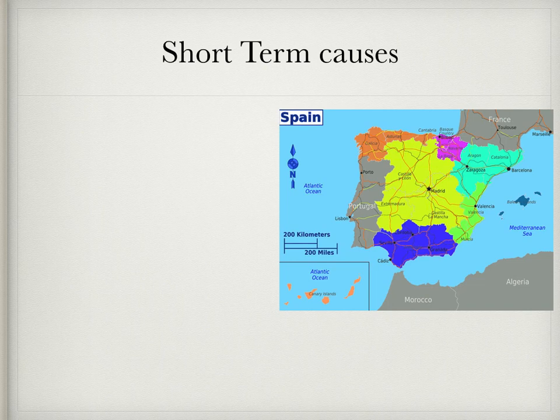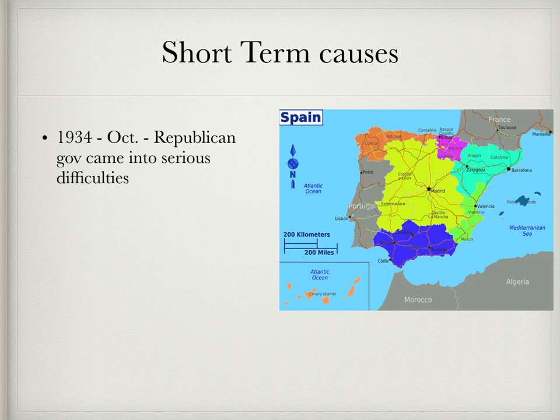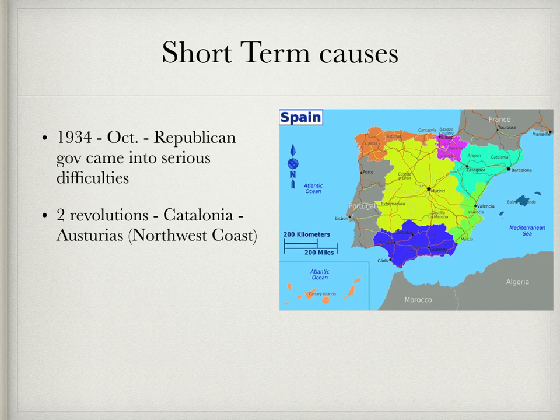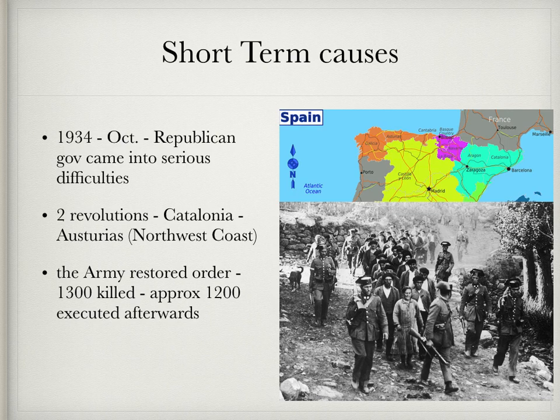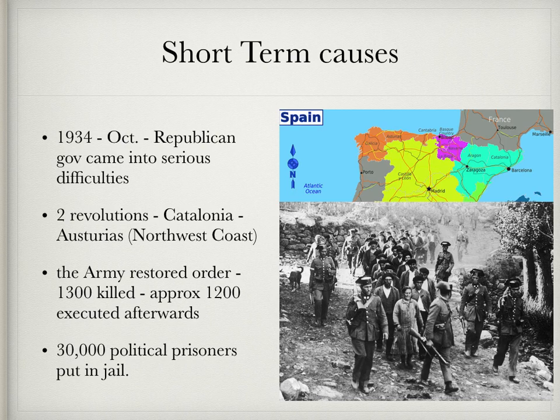Now for the short-term causes of the Spanish Civil War. In October of 1934, the Republican government came into serious difficulties. They had to deal with two revolutions — one in Catalonia and the second in Asturias, on the northwest coast. The army restored order, but 1,300 people were killed and perhaps 1,200 more were executed afterwards. Most importantly, about 30,000 political prisoners were put in jail.